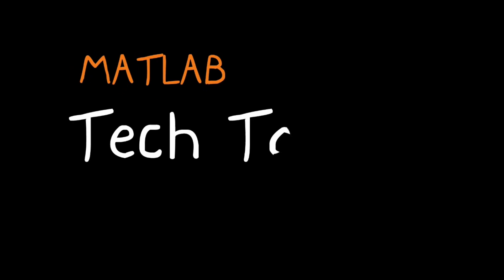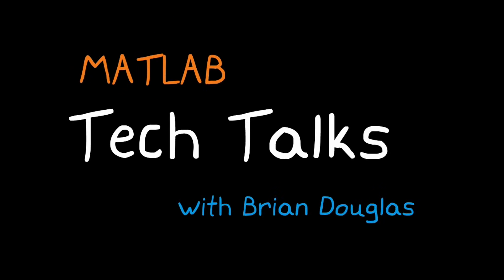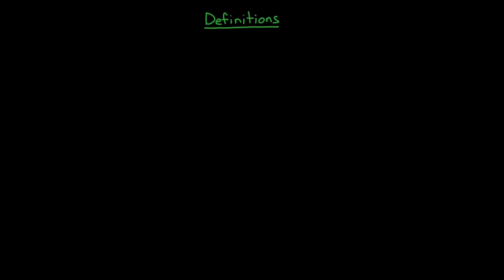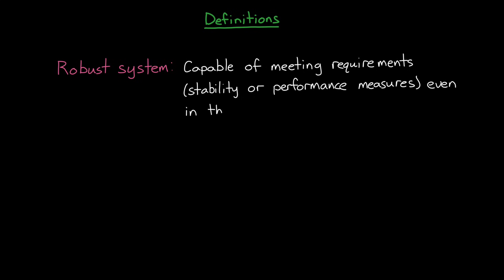I'm Brian, and welcome to a MATLAB Tech Talk. Let's start with some definitions and then we'll circle back around and provide some intuition behind these words. A system is robust if it's capable of meeting requirements, usually stability or performance measures, even in the presence of model or disturbance uncertainty.